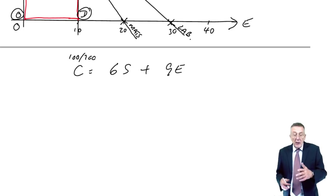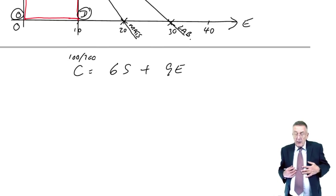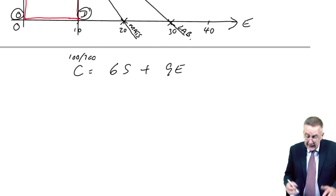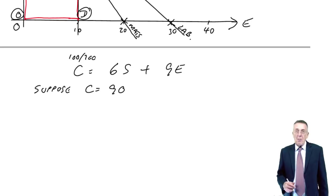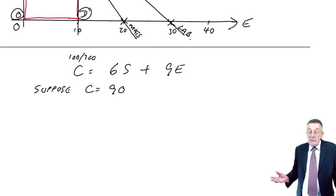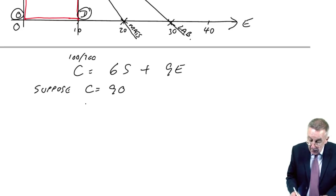And so what we do, pick any contribution we want. I'll pick a contribution of 90. Suppose the contribution is 90. Just suppose. I've no idea. Might be 90, might be 900. No idea at all. But if it were 90, 6s plus 9e would be 90.